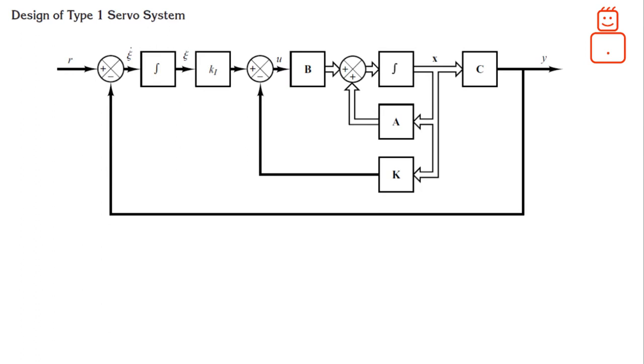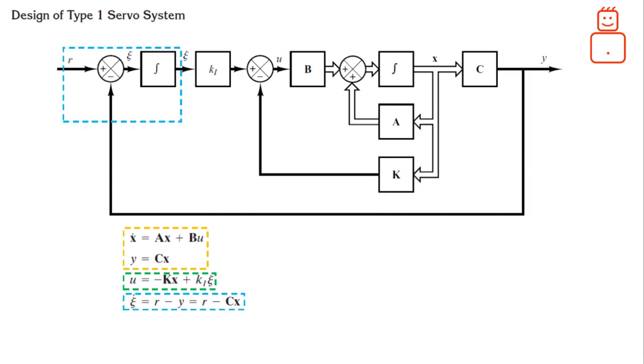From this block diagram, we can obtain the following dynamics. First, we have a state realization of the undertaken process. Second, we can assume a dynamic for the control law. And finally, the change in the error value between the desired reference R and the process output Y is represented as the variable psi as shown.